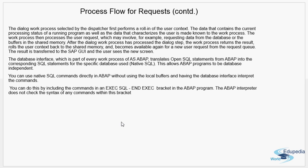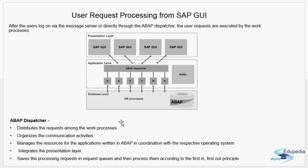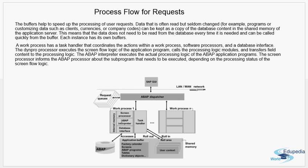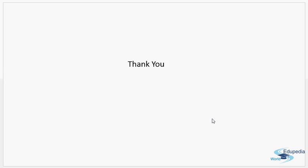So this is a short topic summary: we have learned what the dispatcher is and what it does. We have seen the shared memory, which has buffers and a roll area storing the user context. We have also seen the internal architecture of an SAP work process — the main component that does actual processing in an SAP system. In our next topic we will see the different types of work process and their uses — what job each work process performs.